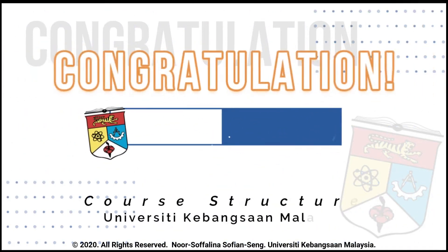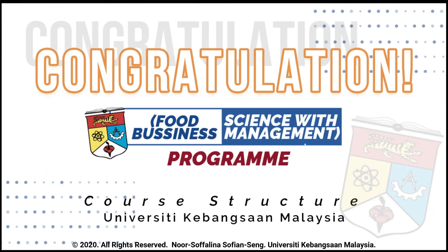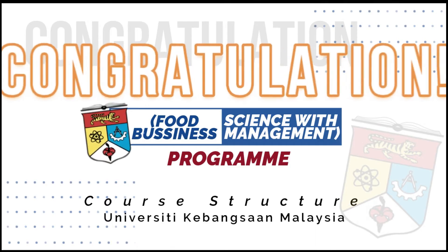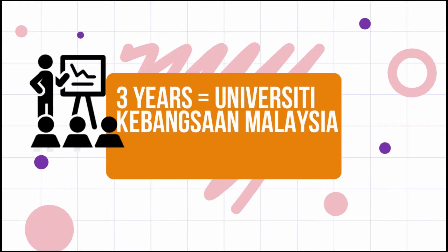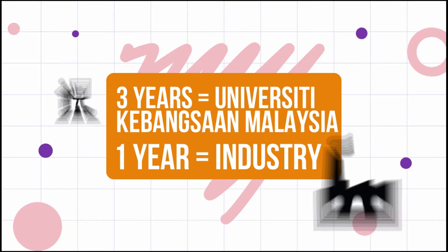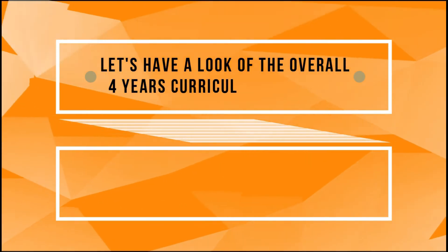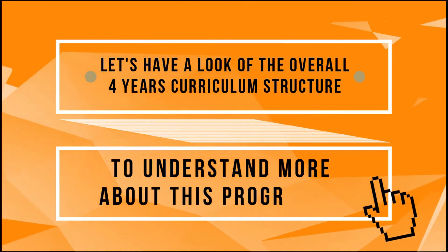Congratulations on your successful admission to the Food Science with Business Management Program. Your degree is a 3U1I undergraduate program, which means 3 years in the university and 1 year in the industry. Let's have a look at the overall 4-year curriculum structure to understand more about this program.